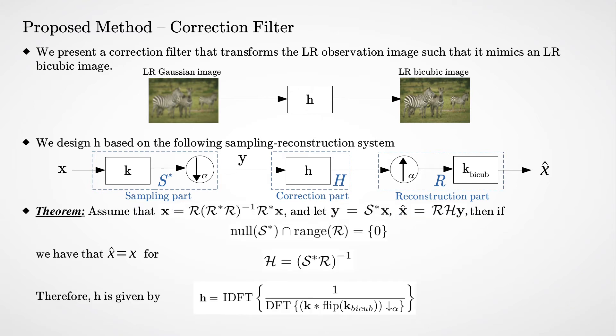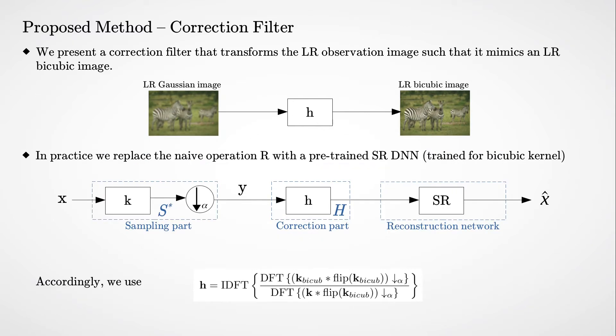Assuming that X is in the range of the projection onto R, and that the null space of S star does not intersect with the range of R, we have a perfect reconstruction of X using the following H, which is equal to the inverse of K convolved with a bicubic kernel followed by subsampling. For super resolution, we replace the reconstruction part of the system with the SR network.